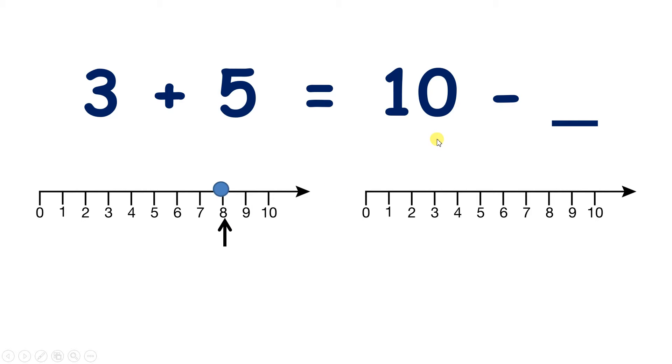So now, over here on the right, we have 10 minus something. And we know that the answer has to equal 8, because it has to be the same as 3 plus 5. So putting the question another way, how many do we have to take away from 10 to get 8?